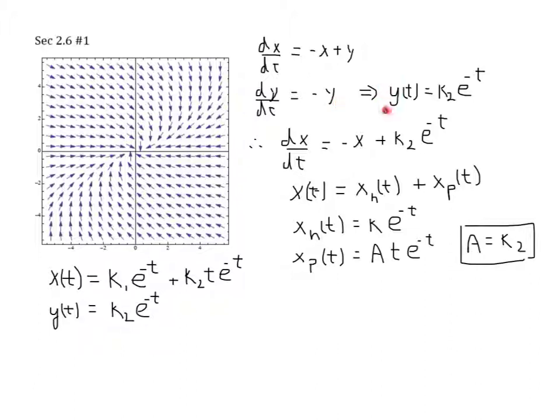Taking this value of y and substituting it in here, I rewrite my equation for x of t, dx dt, with minus x. But in place of y, I use what I know y must be, k₂e to the minus t. Well, this again is from section 1.8. It's a linear, non-homogeneous differential equation. The non-homogeneous term is this.